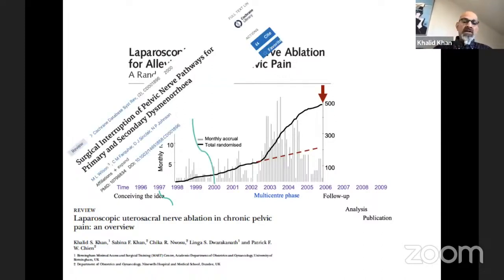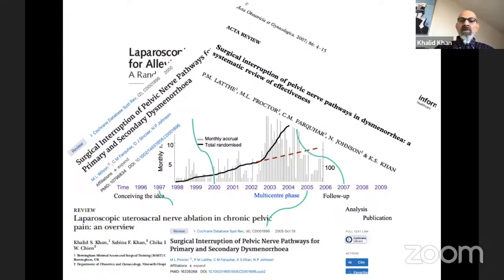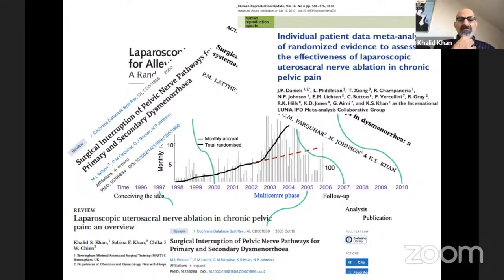During the course of the trial, another systematic review appeared because other parties were undertaking research in the same area. By the time the trial was to be completed, yet another systematic review appeared as an update. After completion of recruitment but before publication, yet another systematic review was published. On publication of the trial, a further systematic review was published, this time using a more sophisticated approach to meta-analysis using the raw data of all the trials. You can now see that the life of a clinical trial is integrally related to systematic reviews and meta-analysis.